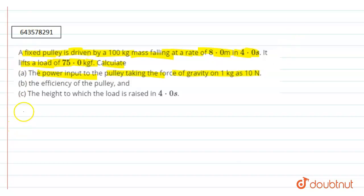It is given that the force on 1 kg is 10 newton. So, the force on 100 kg will be equals to 10 into 100 which comes out to be 1000 newton.